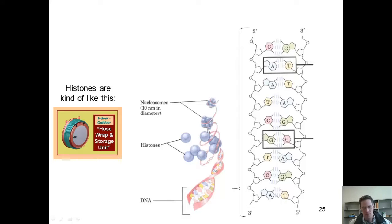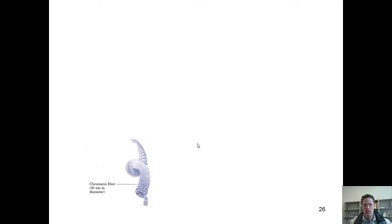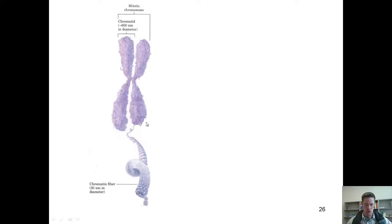Nucleosomes are then wrapped around in a larger structure shown here, which is called chromatin fiber. Chromatin fiber, which is made up of numerous histone clusters wrapped up with DNA, then coils to form the chromosome superstructure shown here.